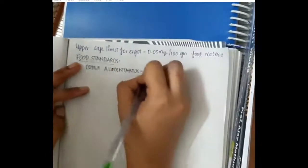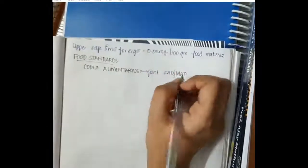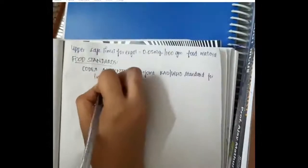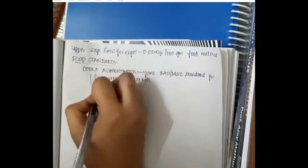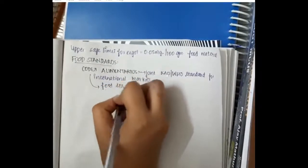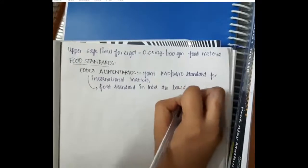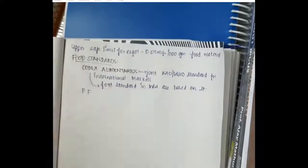One is Codex Alimentarius. Codex Alimentarius is a joint food agricultural organization and WHO standard for international markets. Food standards of India are based on this Codex Alimentarius. But these are put forward by FAO and WHO for international markets.